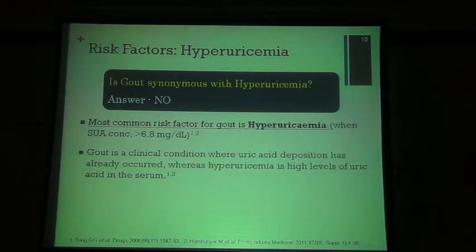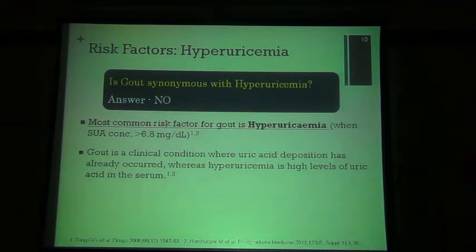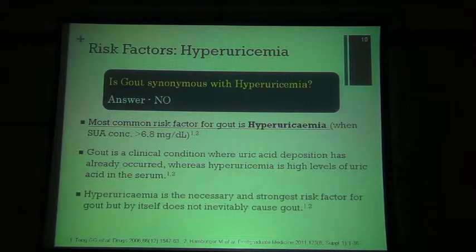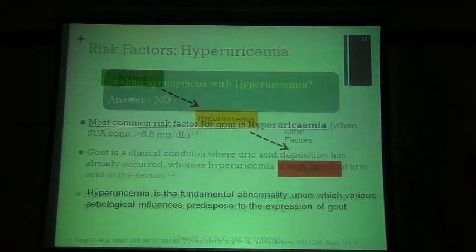This is a constant matter of debate. Gout is a clinical condition where uric acid deposition has already occurred. Hyperuricemia on its own does not mean the patient has gout. Everyone accepts hyperuricemia is a risk factor for gout, but on its own may not cause gout — it needs to be associated with other risk factors.